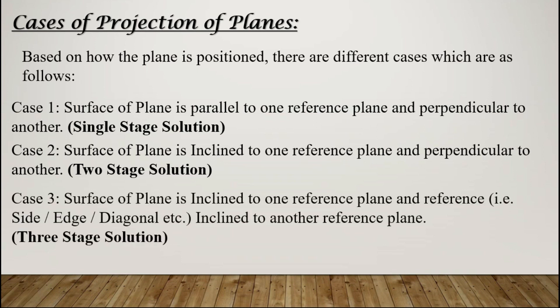Case three — this is the most preferred case in examination. The surface of the plane is inclined to one reference plane, and a reference element such as a side, edge, or diagonal is also inclined to another reference plane. It consists of three stages, involving three front views and three top views. This is the most asked type of question in examinations.